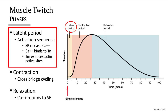The contraction phase is where the actual contraction takes place — cross-bridges are bending and pulling on actin, bringing the Z-lines together. The relaxation phase is when calcium is being pumped back into the sarcoplasmic reticulum, removed from troponin, and the active sites are being covered up — cross-bridges are no longer binding.